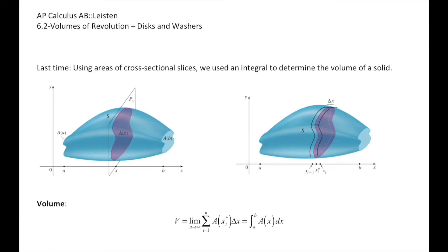Last time we were looking at volumes of solids with specific shapes that made up cross-sectional slices. Now we're going to continue on this idea of finding areas, but we're going to think about areas of revolution. If we take some curve and revolve it, rotate it about some line or axis, we're going to get some three-dimensional shape. Volume is always area times the base times the height, and we're applying Cavalieri's principle where we can slide things around.